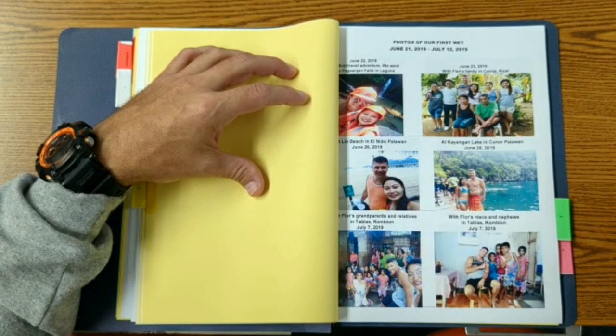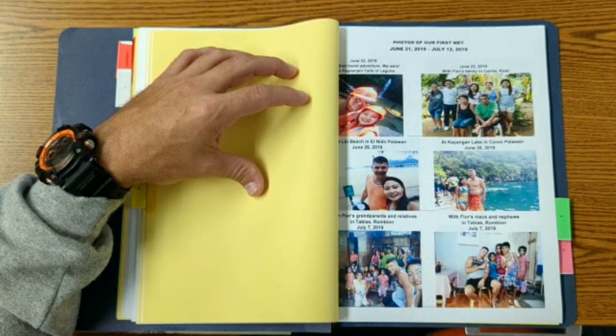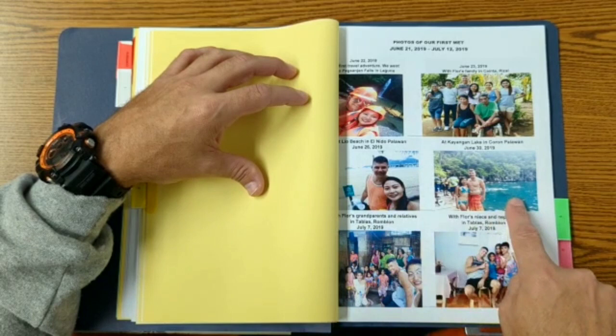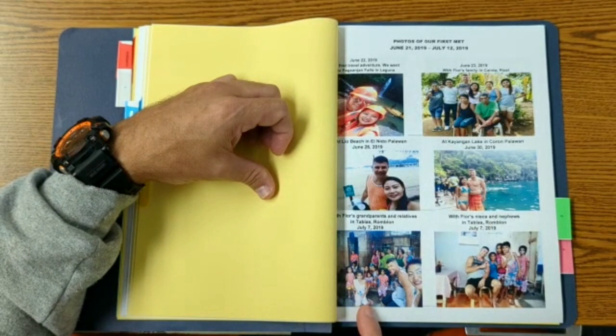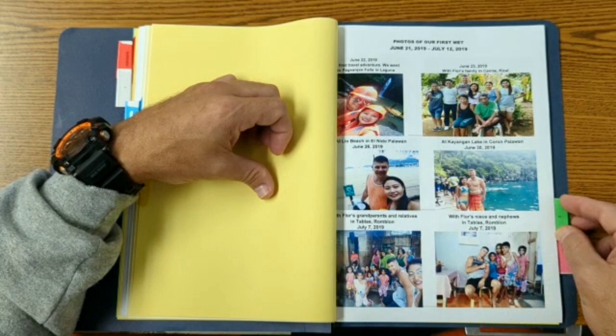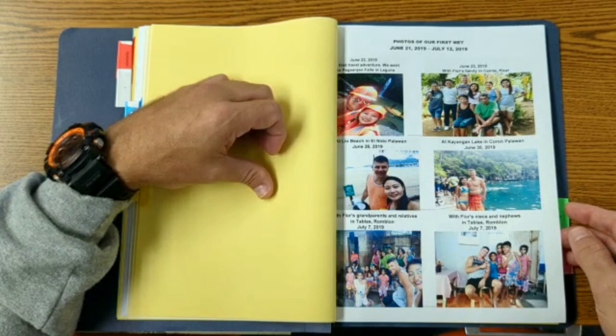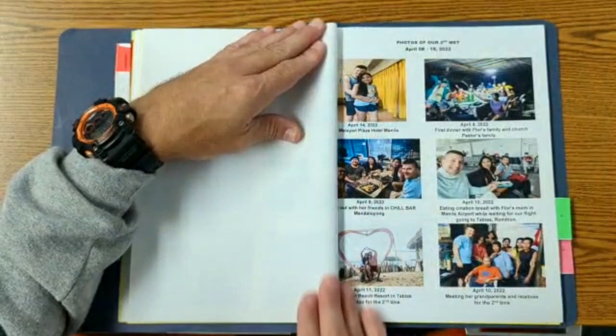And then we actually ended up traveling to Tablas. This is where she's actually from. Photos at the beaches in Tablas, some of our excursions. And then here's photos with her family. Here's more photos with her family. So that was back in July, this is July 7th, 2019. We obviously took a lot more than this, but we were only supposed to show four to six from each trip to keep it nice and short.